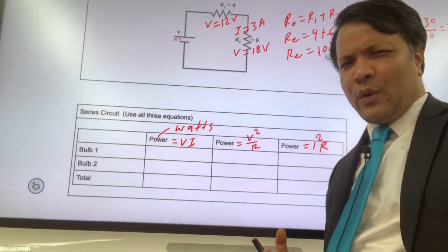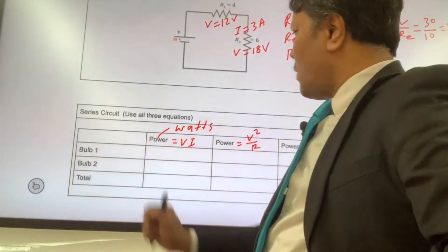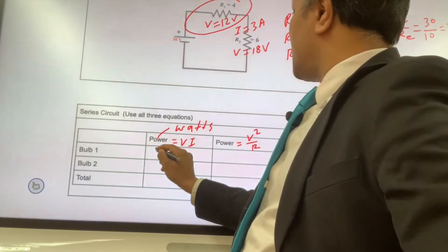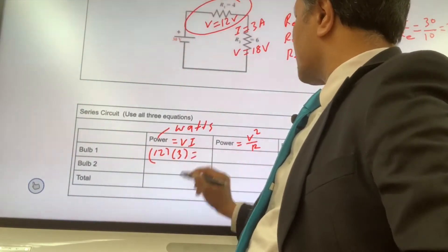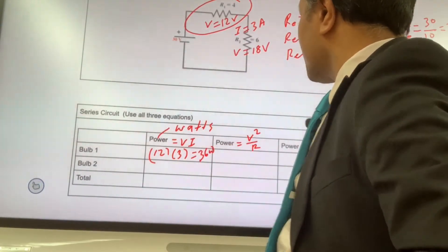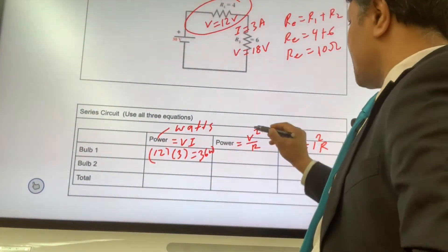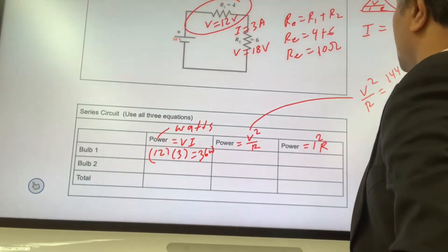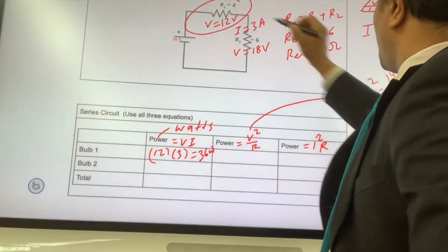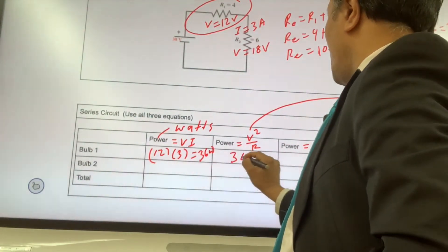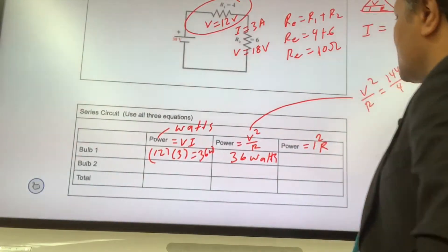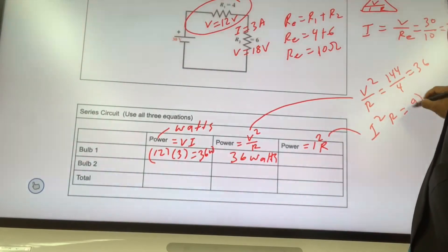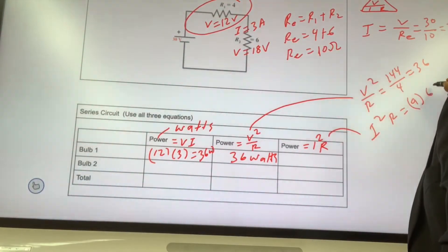Now we can find the power for bulb one. The voltage across bulb one is 12V and the current is 3A, so P = VI = 12 × 3 = 36 watts. Using the second equation, V²/R = 144/4 = 36 watts. Using the third equation, I²R = 9 × 4 = 36 watts. All three equations give us the same answer: 36 watts.